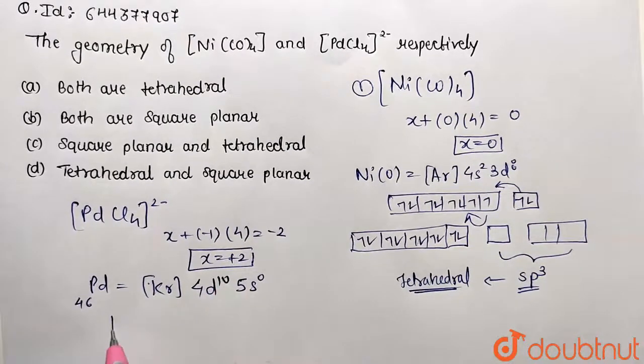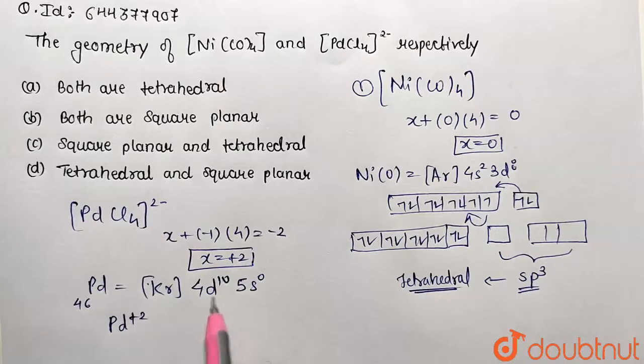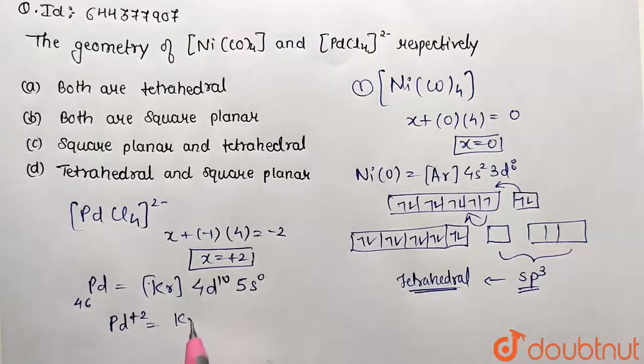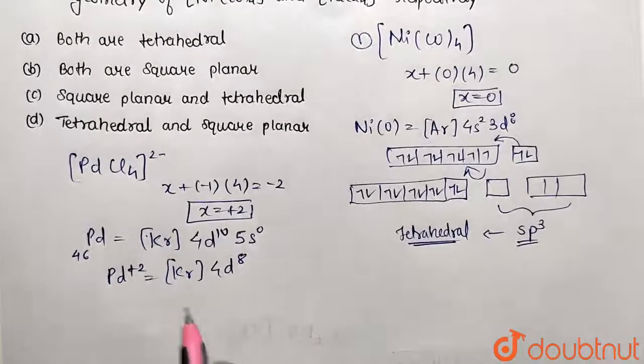To ionize to the +2 state, we disturb this stable configuration. We're now left with 4d⁸ configuration, which we can represent as eight electrons.